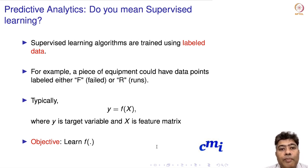When we say predictive analytics, you might ask: Do you mean supervised learning in machine learning literature? Supervised learning algorithms are trained using labeled data. For example, a piece of equipment could have data points labeled as failed or running. Based on the features of the equipment, you want to predict whether the machine will fail or run for the next month. Yes, predictive analytics is exactly supervised learning. In statistics and business, we call it predictive analytics; in machine learning, we call it supervised learning.